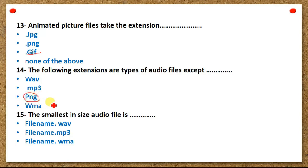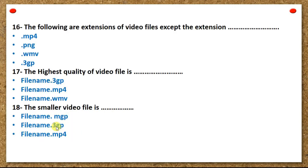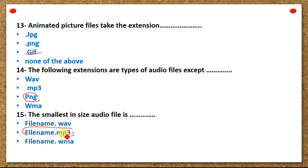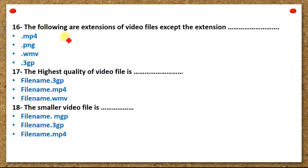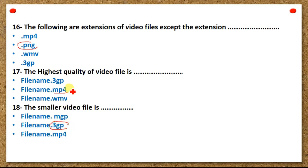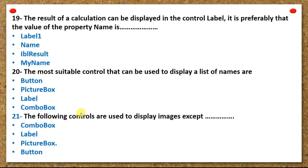Fourteen — the following extensions are types of audio files except: WAV, MP3, WMA. Fifteen — the smallest in size audio file is: filename.wav, filename.mp3, or filename.wma. Sixteen — the following are extensions of video files except the extension: MP4, dot PNG, MOV, or 3GP. Seventeen — the highest quality video file is: filename.3GP, filename.MP4, or filename.WMV. Eighteen — the smallest video file is: filename.MGP, filename.3GP, or filename.MP4.